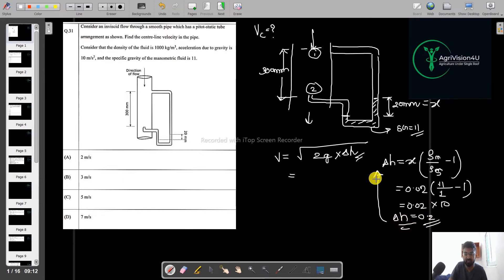Put that value here and you will get under root of 2 into 10 into 0.2. So you will get 2 into 2 equals 2. So straight forward direct answer, we got the answer as 2 meter per second. So let us move to the next question.